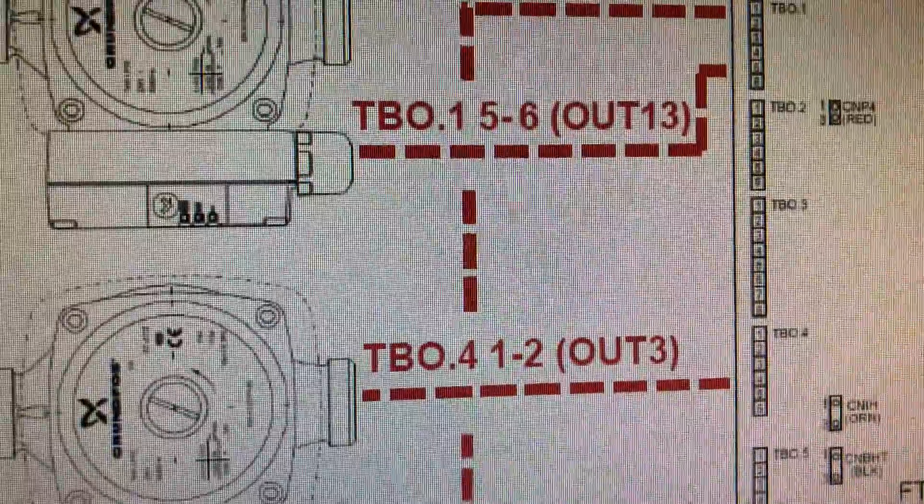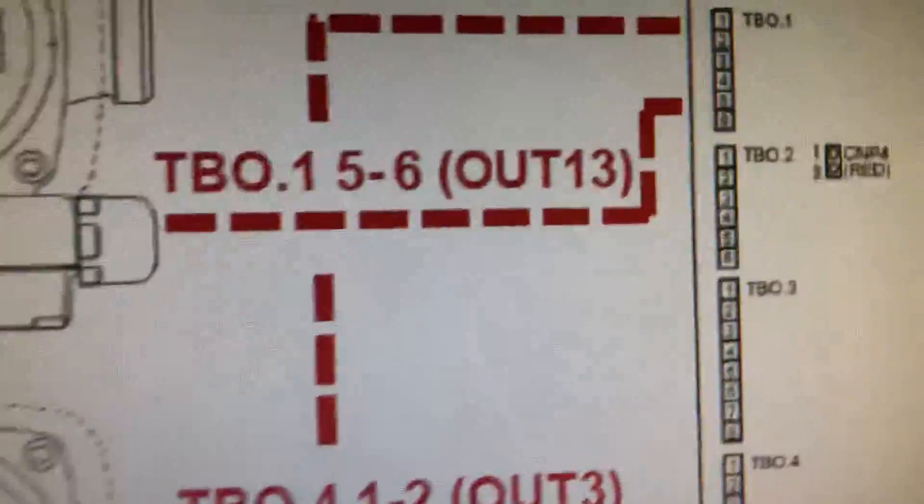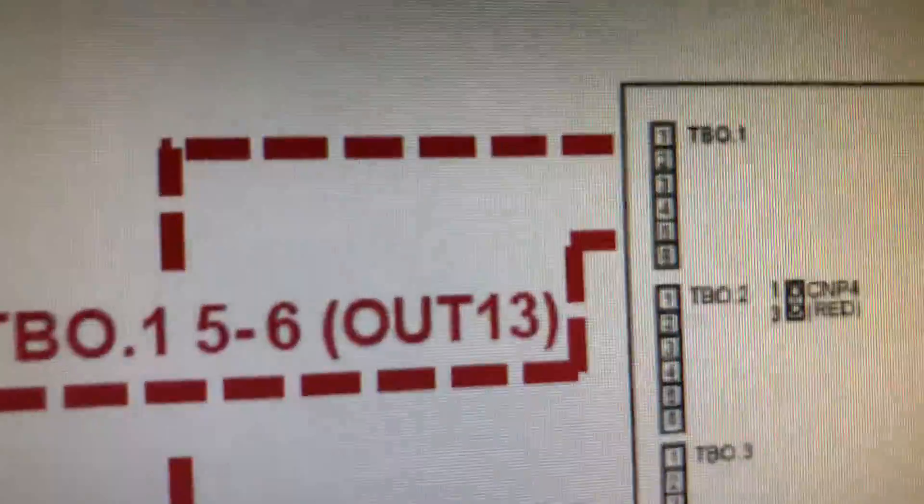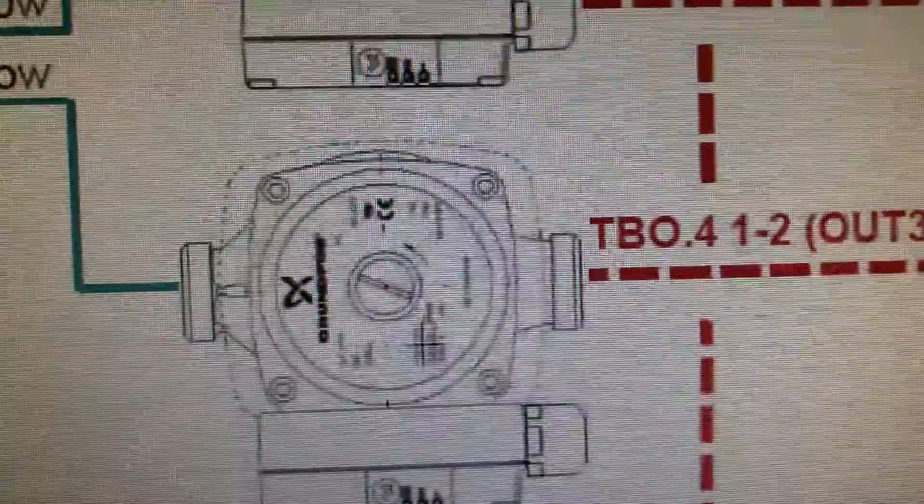That is wrong. TBO 1, 5 and 6 does not go to Zone 1. Look at the outs. Out 3 on the board which is 5 and 6. Out 3 on the board is not 1 and 2.